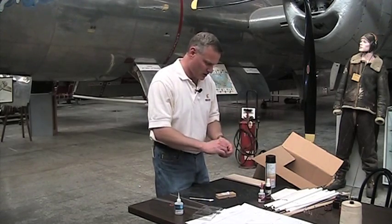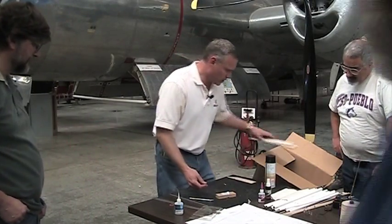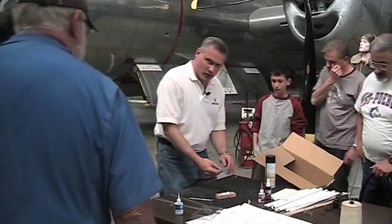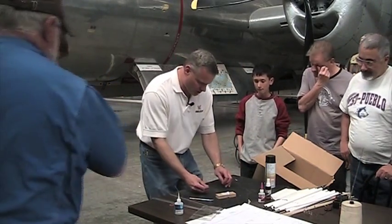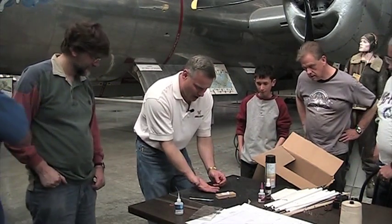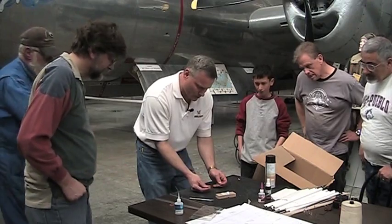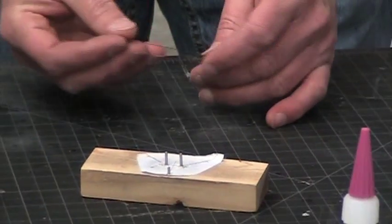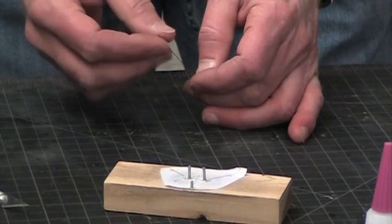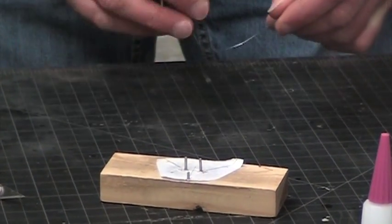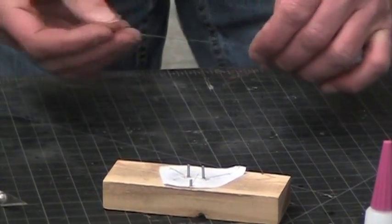All right, so here we have music wire, and this is the smallest diameter they make. I think it's like 0.015 inches - that's what I was able to find. Yeah, it's very, very, very small.